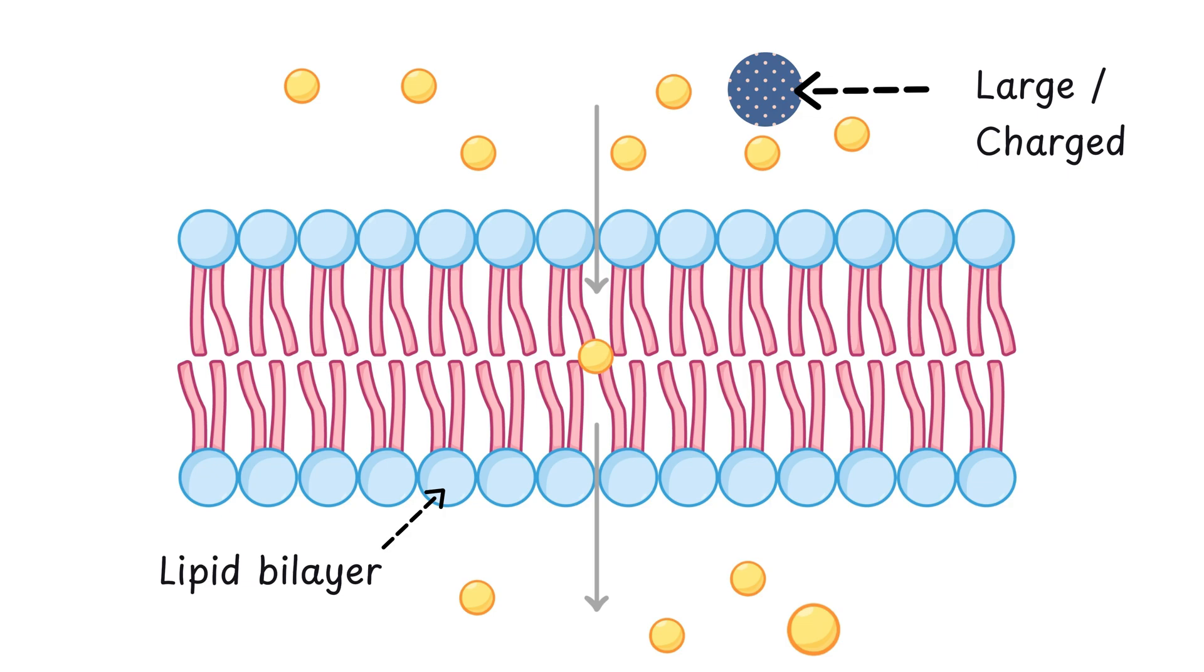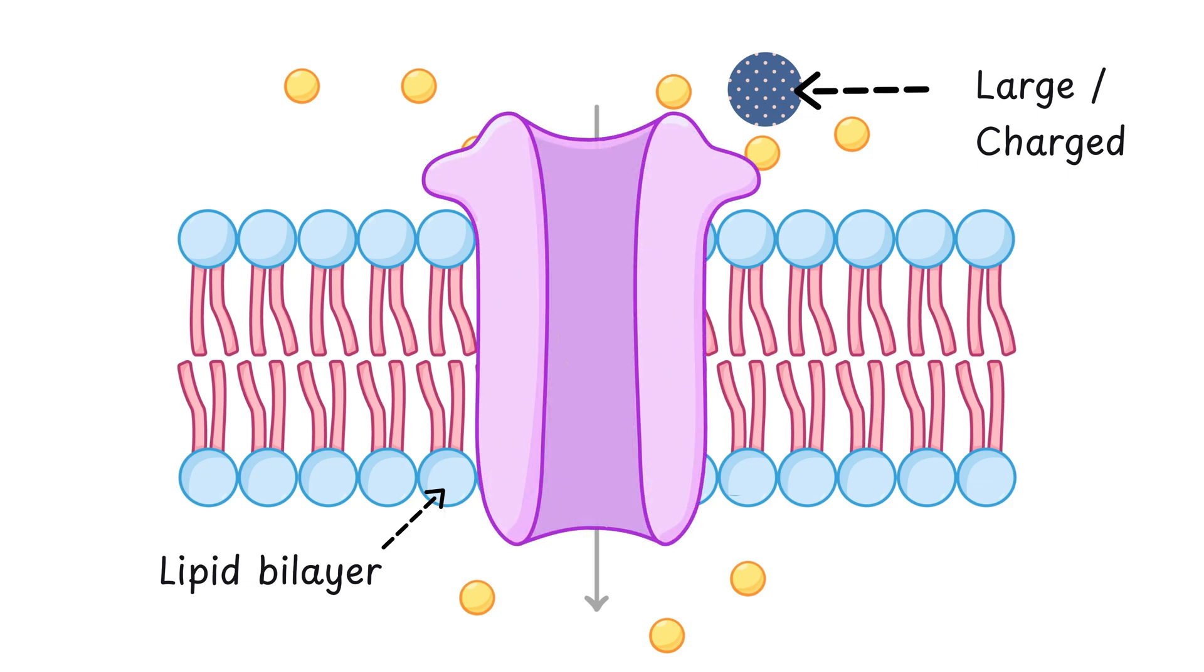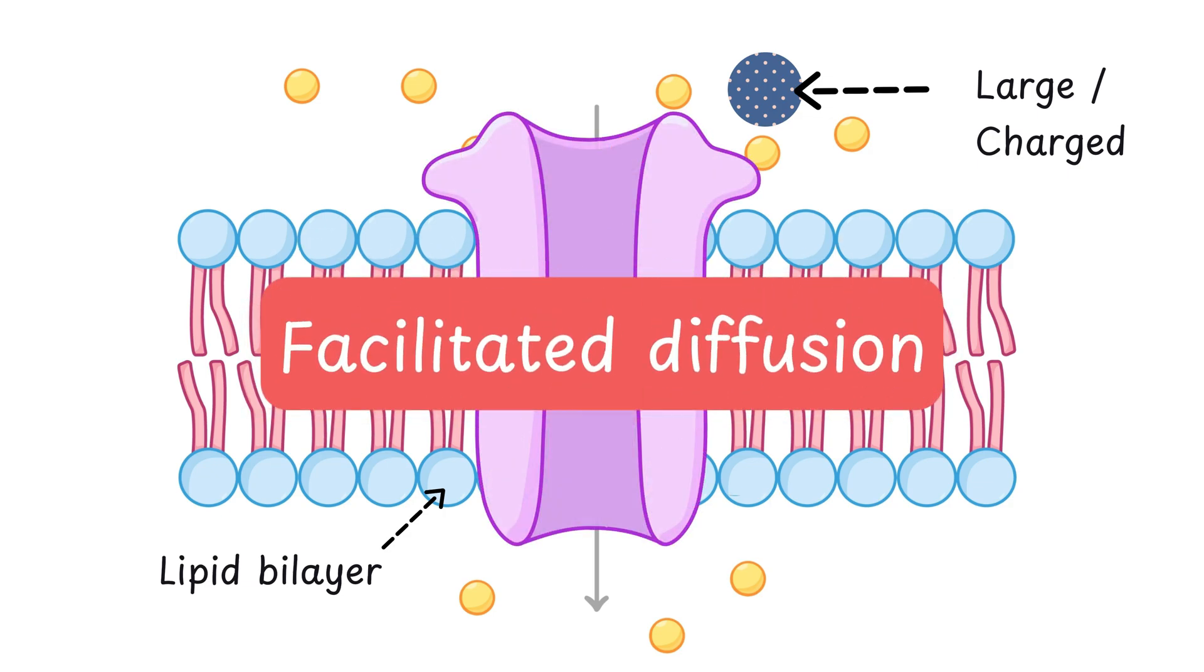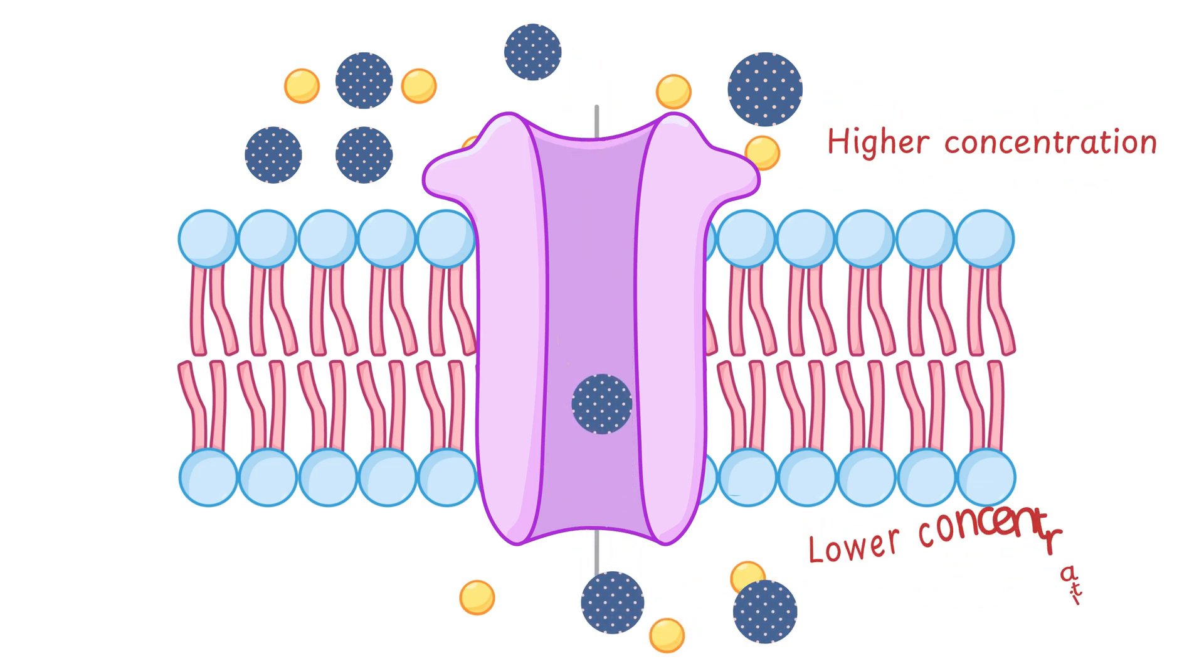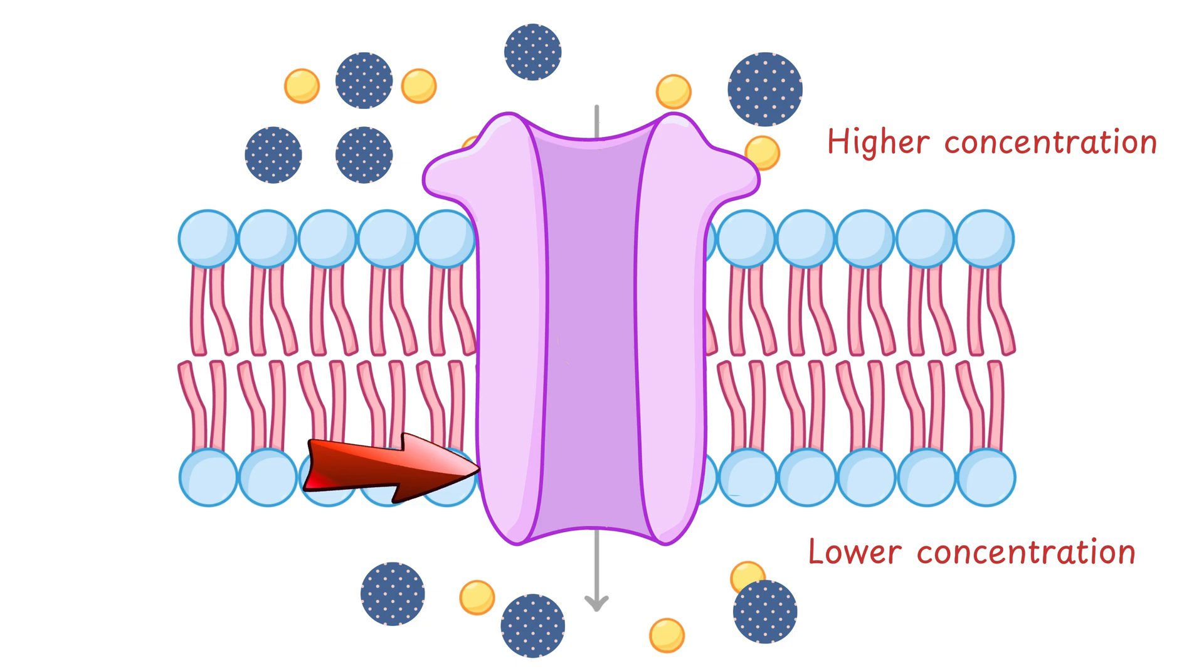In such cases, the cell uses this special transport mechanism called facilitated diffusion. It's a special type of diffusion. The basic principle stays the same: molecules move from an area of higher concentration to lower concentration. But the key difference is that the movement is facilitated, or helped, by membrane proteins.